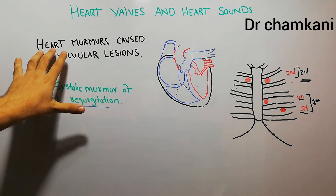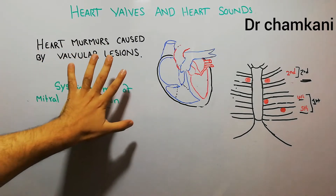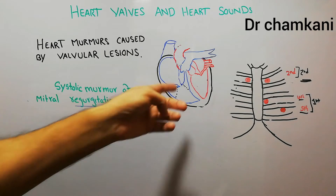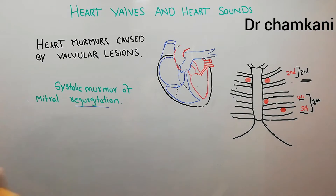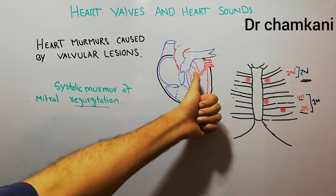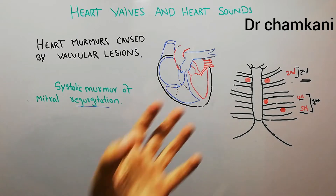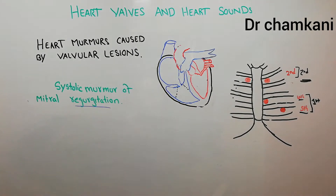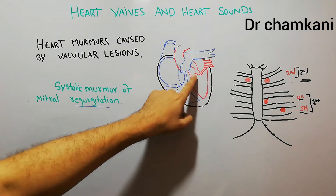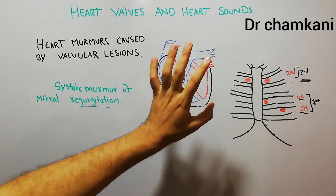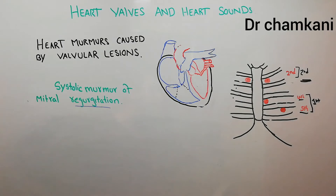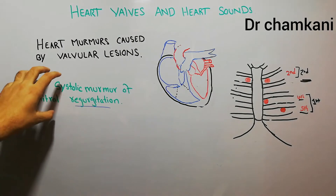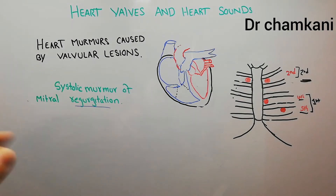We are discussing heart murmurs that are caused by valvular lesions. We have previously discussed the murmur of aortic stenosis and the murmur of aortic regurgitation. The murmur of aortic stenosis is systolic — more of an ejection systolic murmur — while the murmur of aortic regurgitation is more of an early diastolic murmur. The mitral regurgitation murmur is also a systolic murmur.